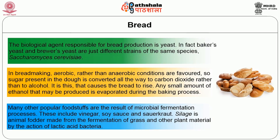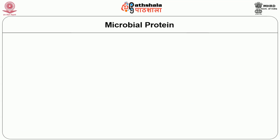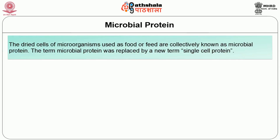Many other popular foodstuffs are the result of microbial fermentation processes. These include vinegar, soy sauce and sauerkraut. Silage is animal fodder made from the fermentation of grass and other plant material by the action of lactic acid bacteria. The next important microbial product is microbial protein. The dried cells of microorganisms used as food or feed are collectively known as microbial protein.